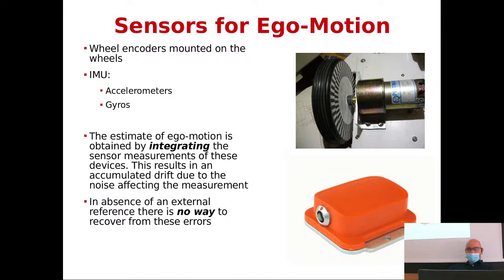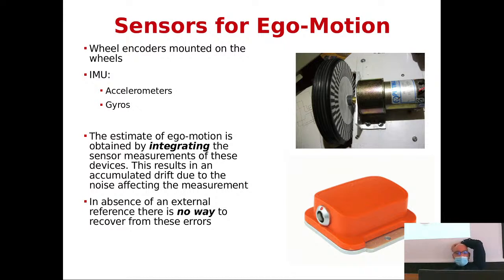Basically, if you have an error in your accelerometer, your estimate will be bound to the stratosphere in no time — or the center of the earth, depending on the direction of the bias. The estimate of ego motion is obtained by integrating. If you have a constant error in the encoders, the error grows linearly with the motion of the wheel. Without an external reference system, it is not possible to navigate for long using only ego motion sensors.